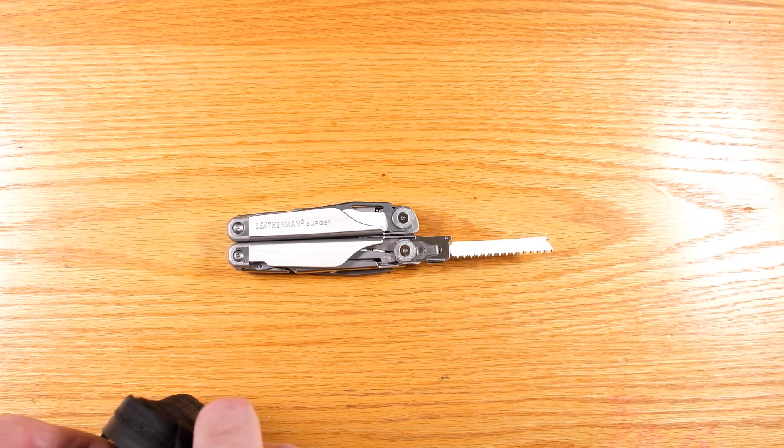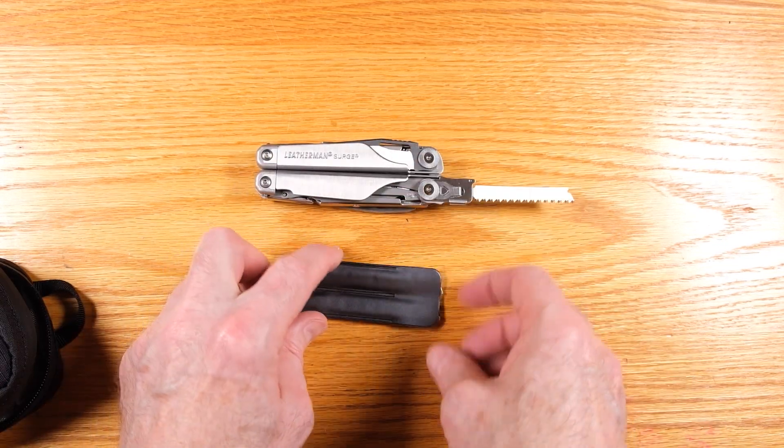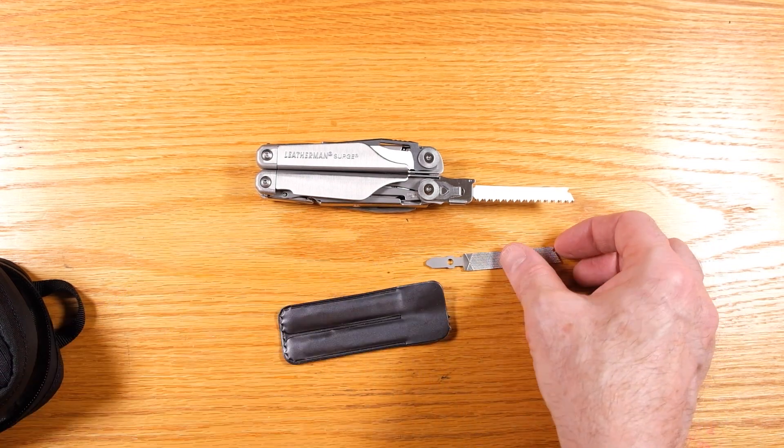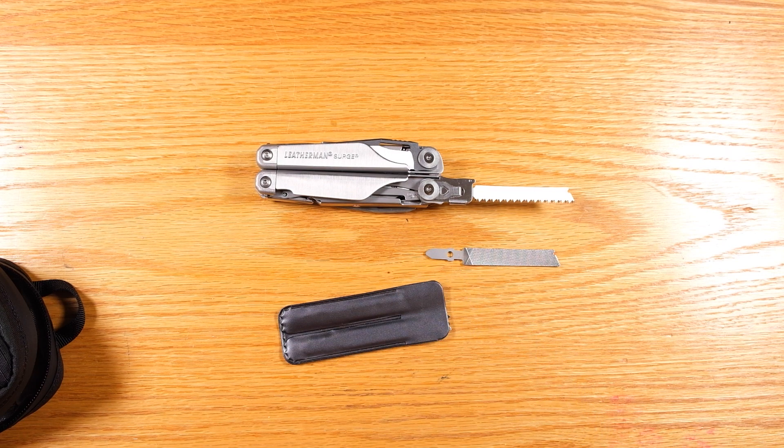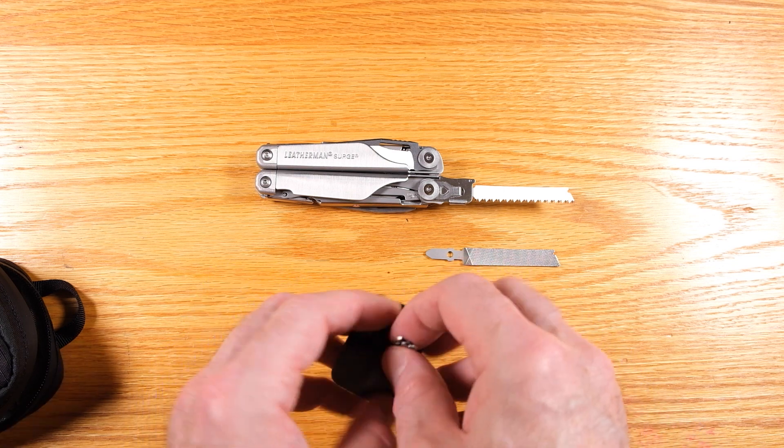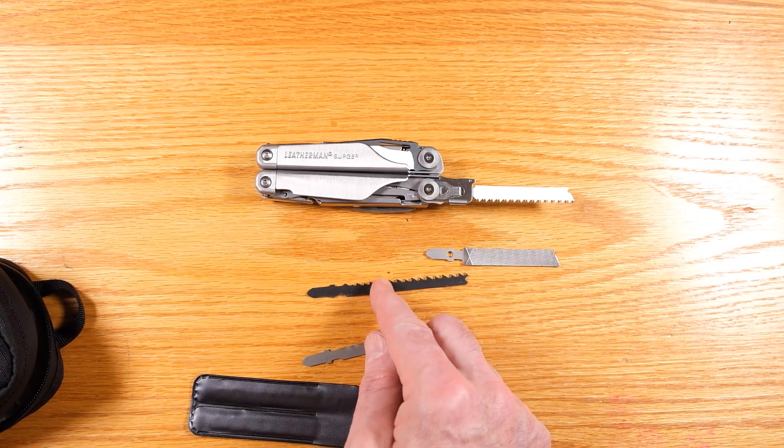And the tool actually comes with this little vinyl pouch. And in this little vinyl pouch, it comes with this metal cutting blade slash file. But you can see here, this is like a T-base. That is a standard base for jigsaws. So you go to a big box store, you go to a hardware store, you can buy more blades.